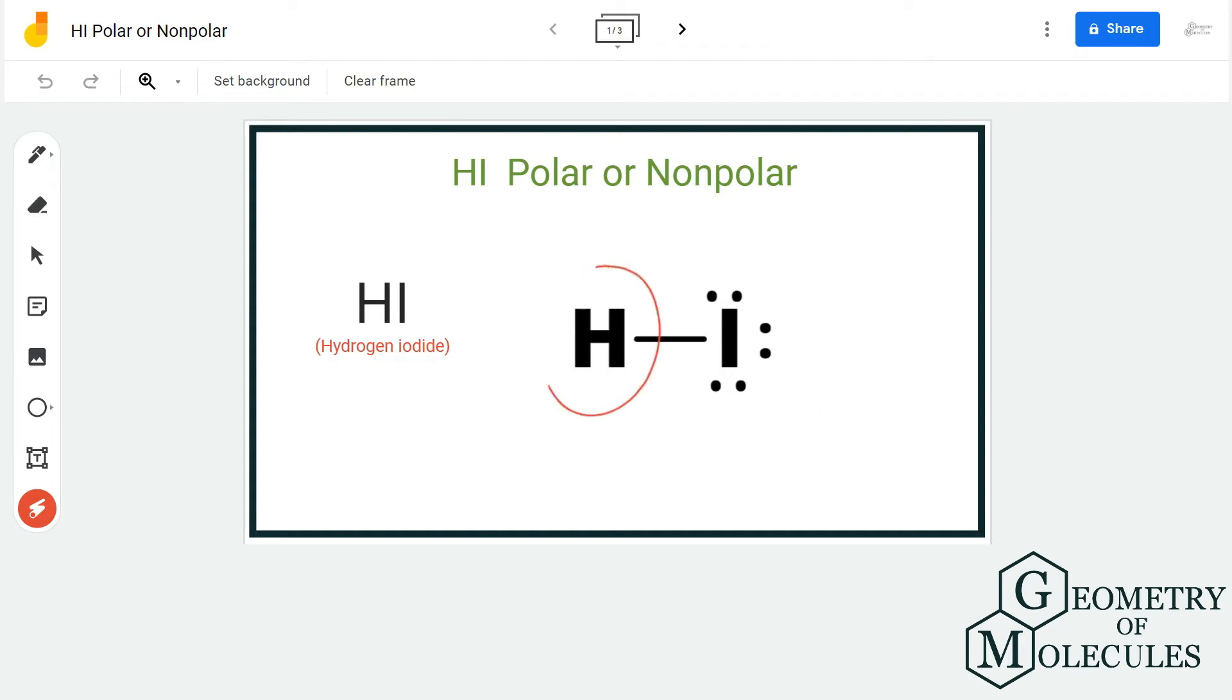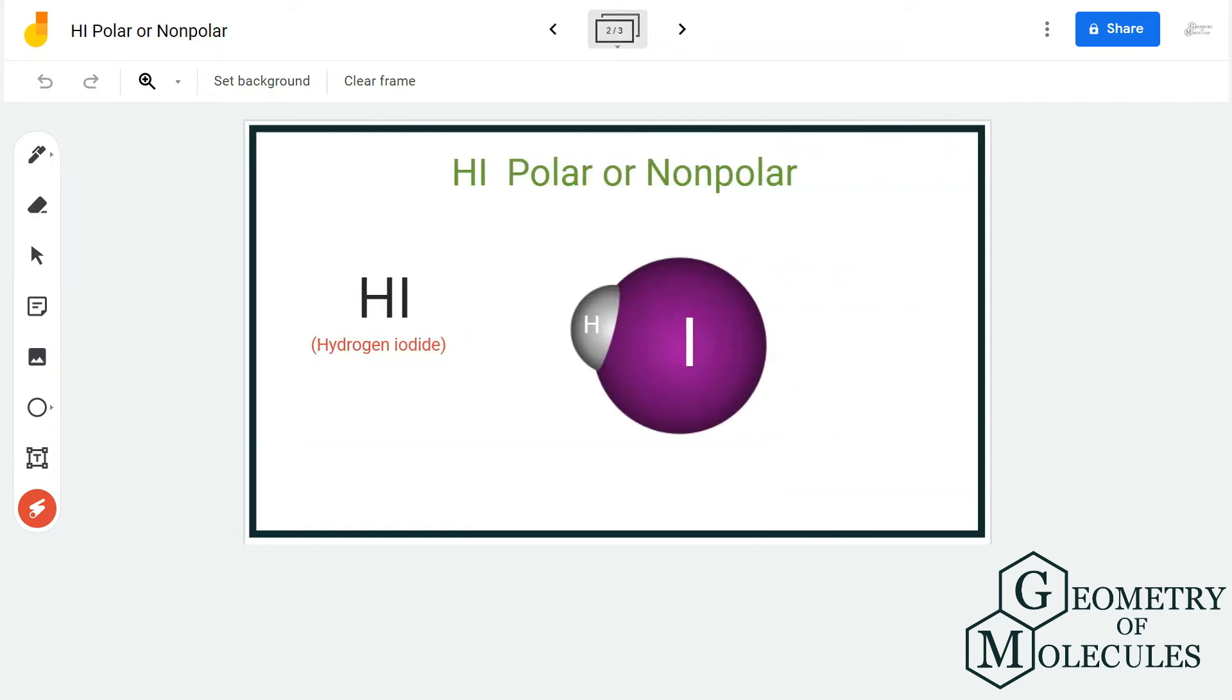Both these atoms are sharing electrons by which they are completing their octets. So its structure is quite simple and even the 3D structure is quite symmetric.